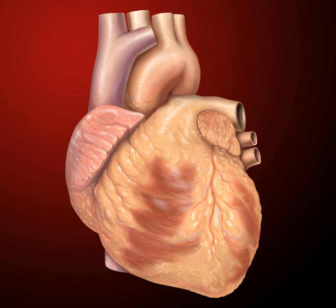In a healthy heart, blood flows one way through the heart due to heart valves, which prevent backflow. The heart is enclosed in a protective sac, the pericardium, which also contains a small amount of fluid. The wall of the heart is made up of three layers: epicardium, myocardium, and endocardium.